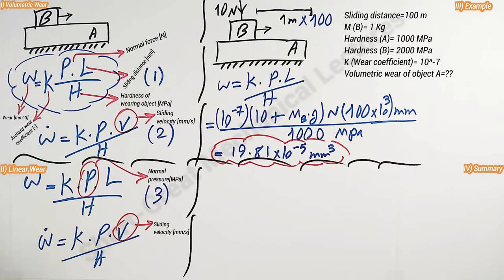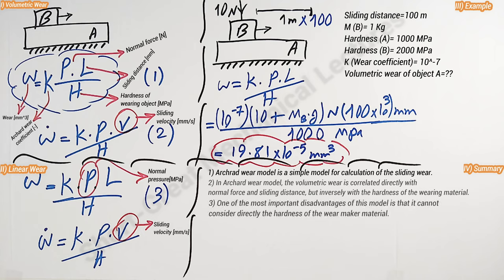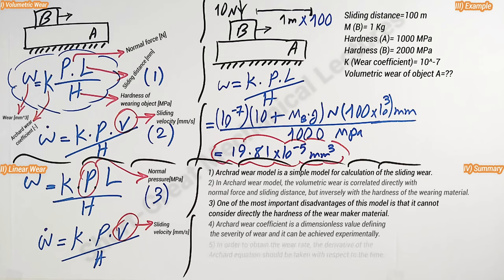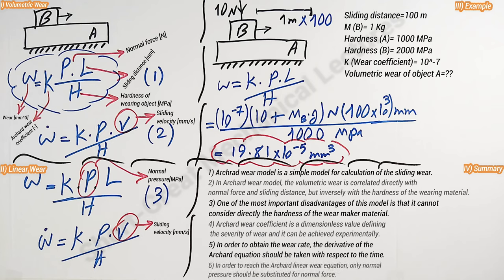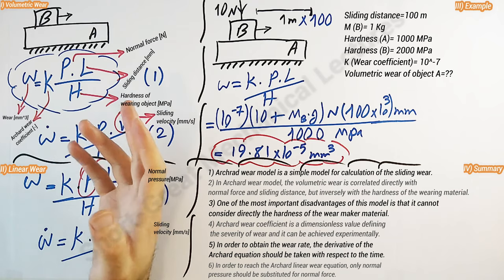So if we come to summary, I would say Archard wear model is a simple model for calculation of the sliding wear. In Archard wear model, the volumetric wear is correlated directly with normal force and sliding distance, but inversely with the hardness of the wearing material. One of the most important disadvantages of this model is that it cannot consider directly the hardness of the wear maker material. Archard wear coefficient is a dimensionless value defining the severity of wear and it can be achieved experimentally. In order to obtain the wear rate, the derivative of the Archard equation should be taken with respect to time. In order to reach the Archard linear wear equation, only normal pressure should be substituted for normal force. So thanks for your watching. Please subscribe for more Mechali-Canel lectures.